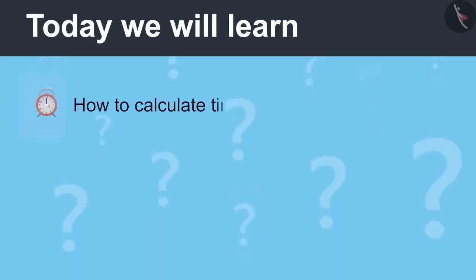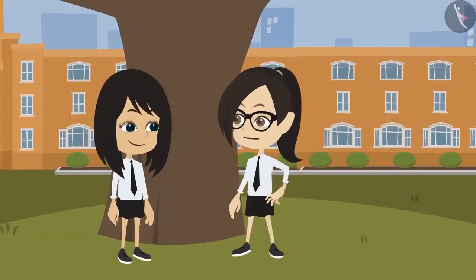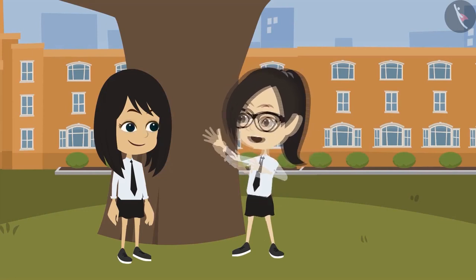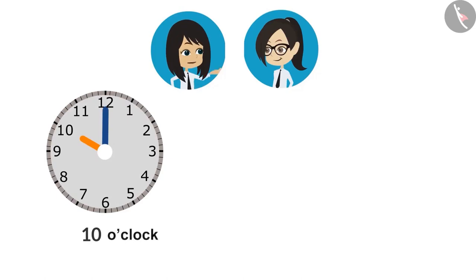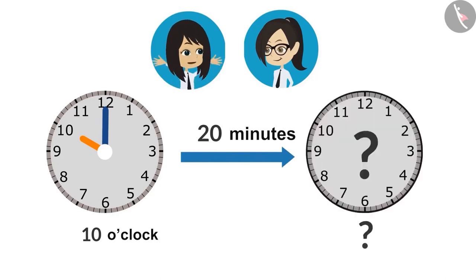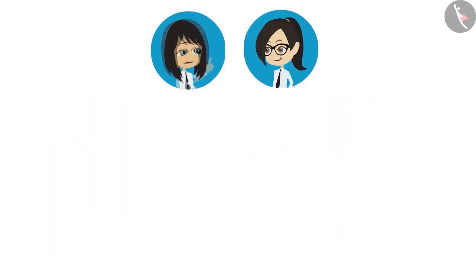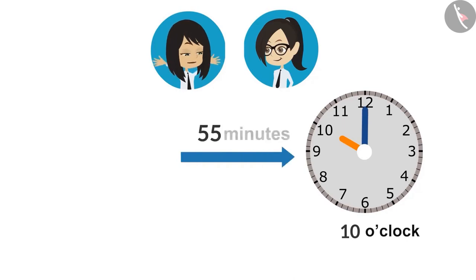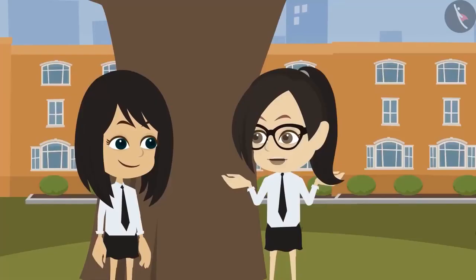Today we will learn how to calculate the time related to completion of tasks. Let us ask each other some questions related to what was learned last time. Last time we learned three things. First, if the start time of a task is known and how much time it will take, we can tell the end time. Second, if the start time and end time are known, we can tell how much time it will take. Third, if the end time and duration are known, we can tell the start time.